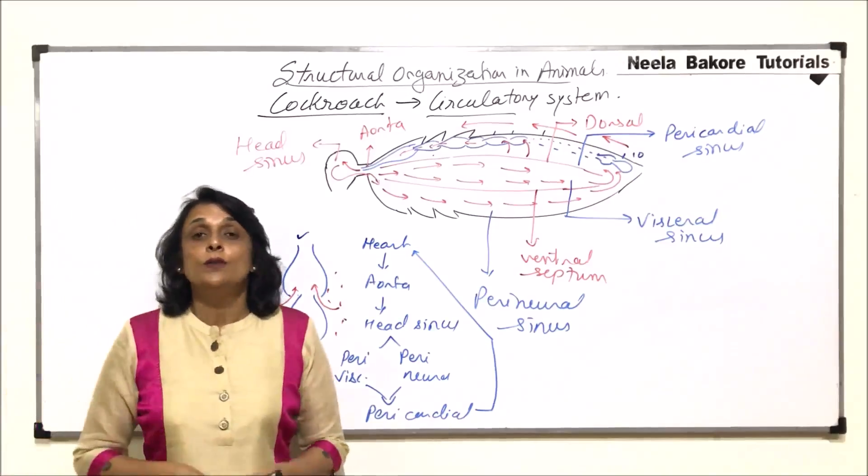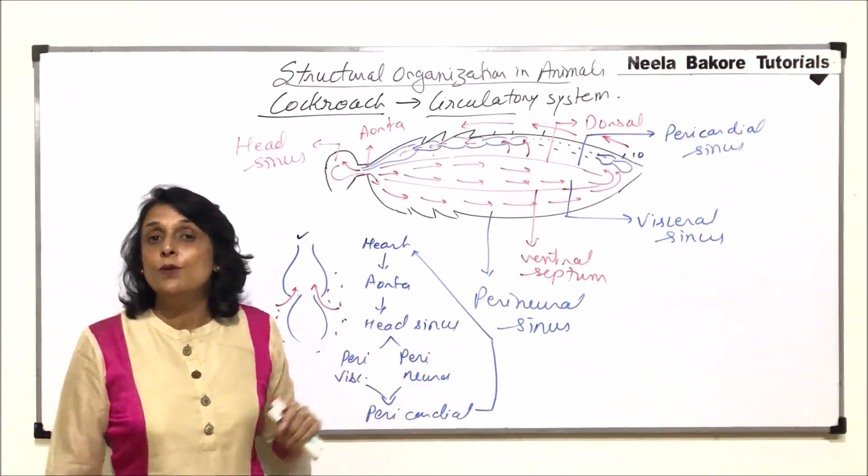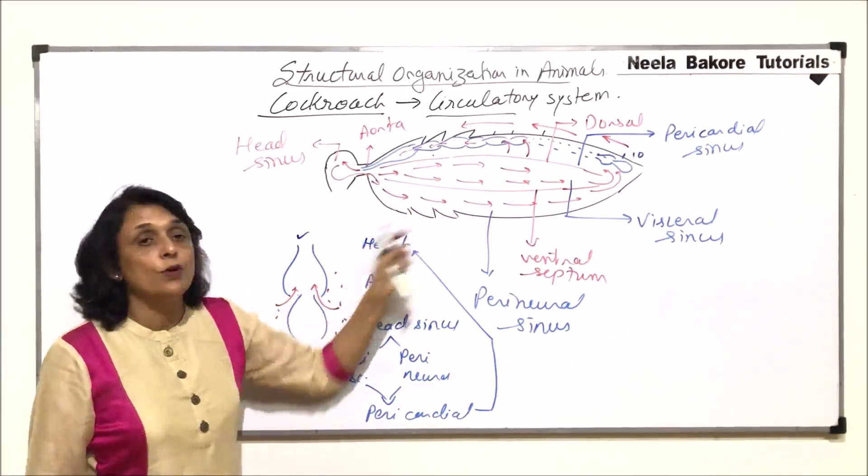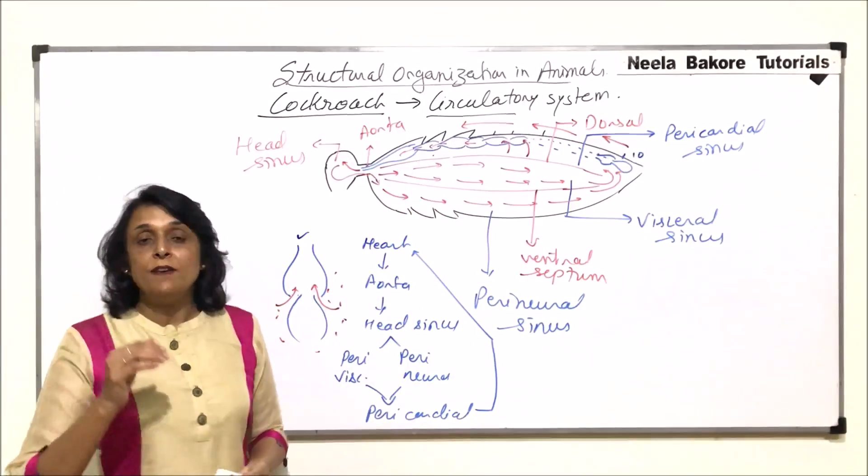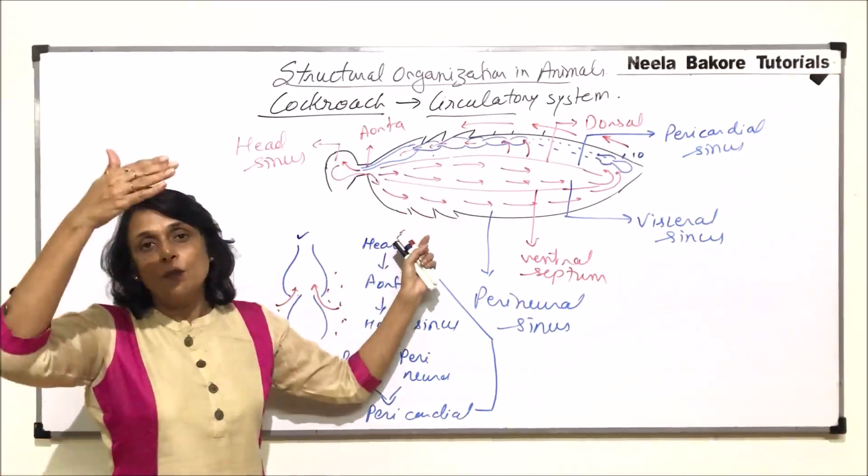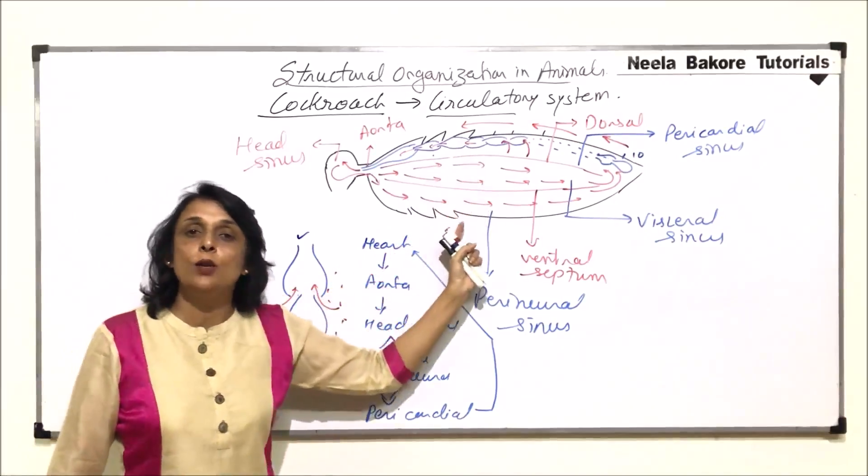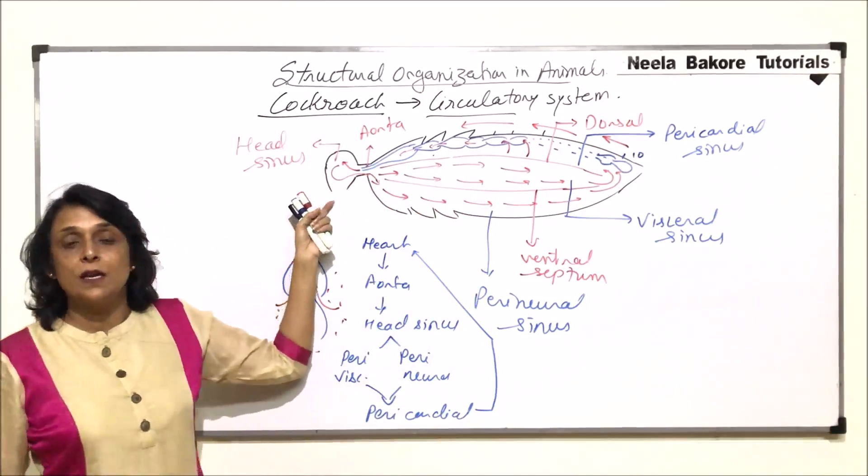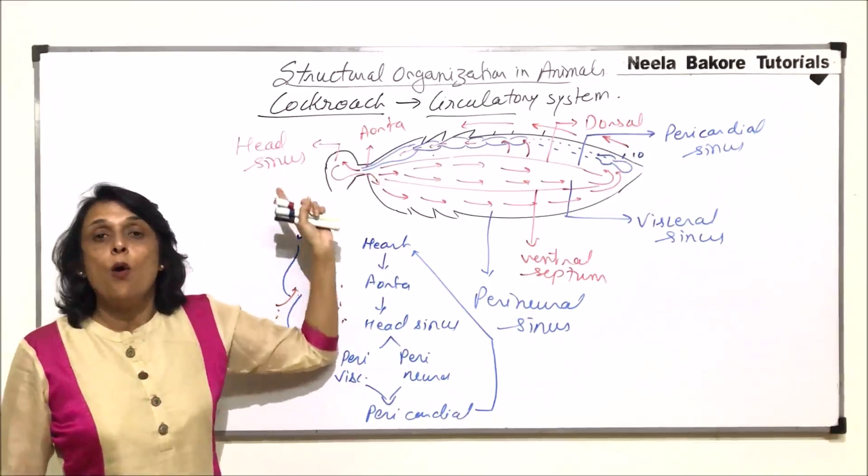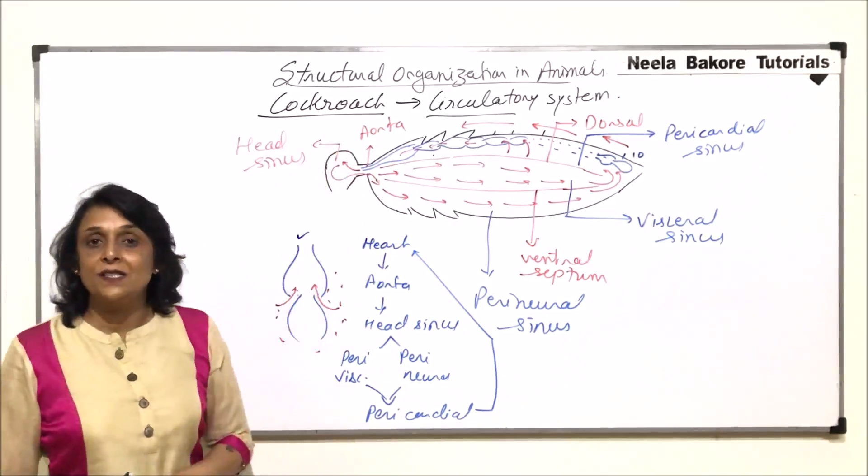So this is how the hemolymph or the blood which is normally the fluid is known as, is going to circulate. So when we saw the transverse section, we were able to see only three sinuses because we cut the body transversely. We saw the upper sinus, middle and the lower. But when we draw this kind of a diagram, we see all four sinuses and the blood gets filled into these sinuses.